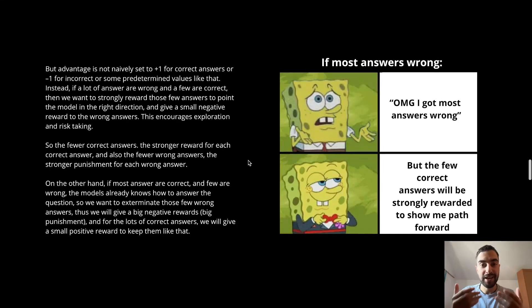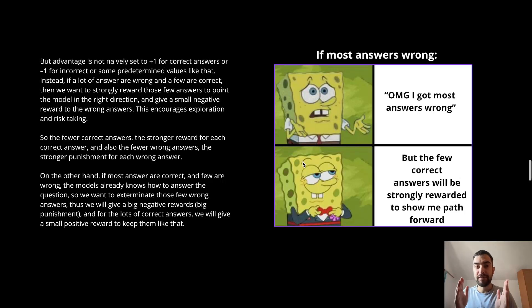On the other hand, if most of the answers are correct and just a few are wrong, that means AI already knows how to solve the answer. So we want to completely exterminate those few wrong answers. So we will give a big punishment for those few wrong answers. And we will just keep small rewards for the correct answers because we just want the AI to keep doing that. Think of it as now we don't want to give huge rewards for correct answers because it already has this general knowledge.